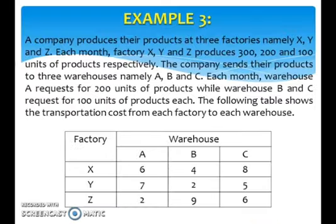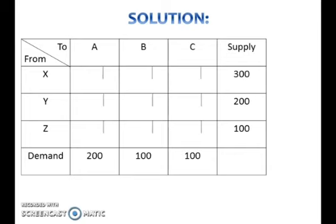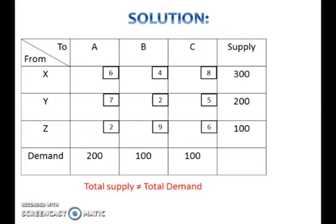Let's look at example 3. To set up a table for this problem, do the same things as in example 1. But note that in this problem, total supply is not equal to total demand. Therefore, this is an unbalanced transportation problem.